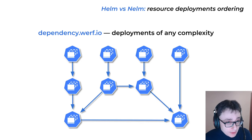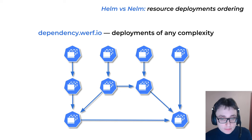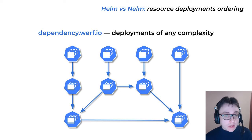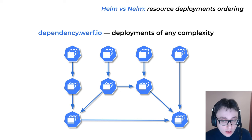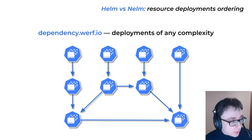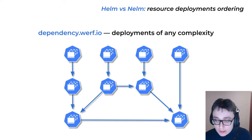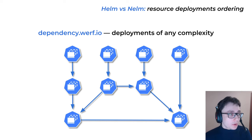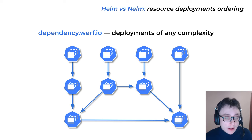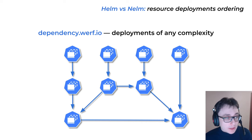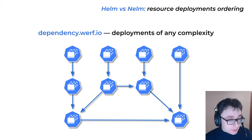With direct dependencies, you can orchestrate deployments of any complexity — no matter how complex the web of dependencies between resources in your Helm chart is, it can be described with direct dependencies and it will deploy in the most effective manner. Summarizing, in addition to the existing techniques available in Helm, we provide two new ones that — unlike those present in Helm — are universal, pretty simple to use, and very powerful.